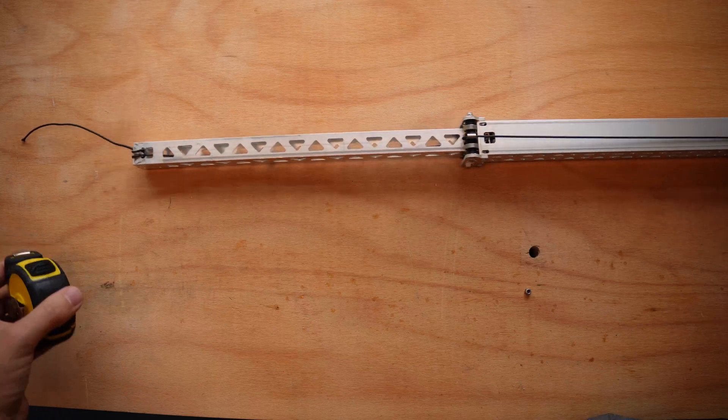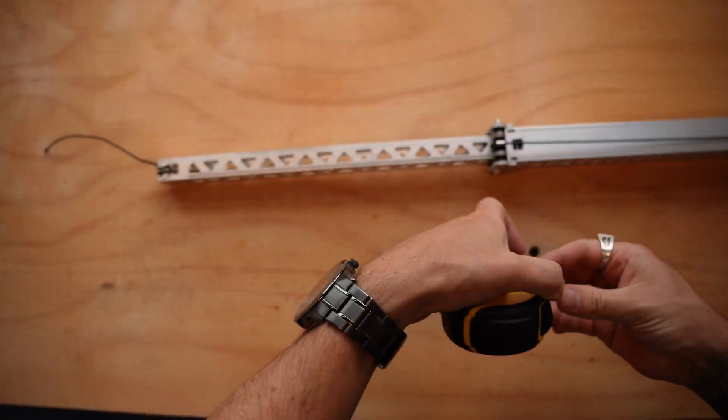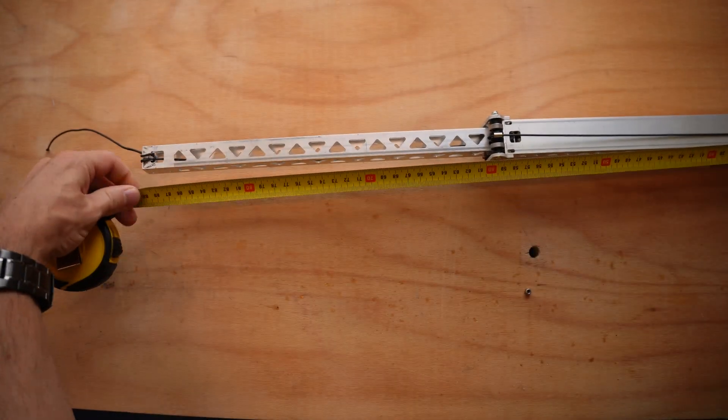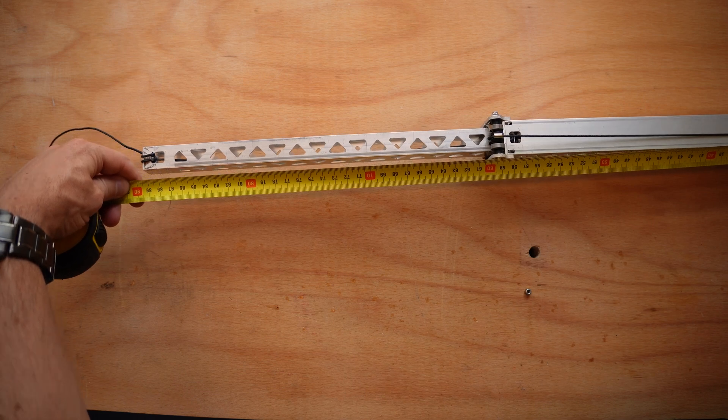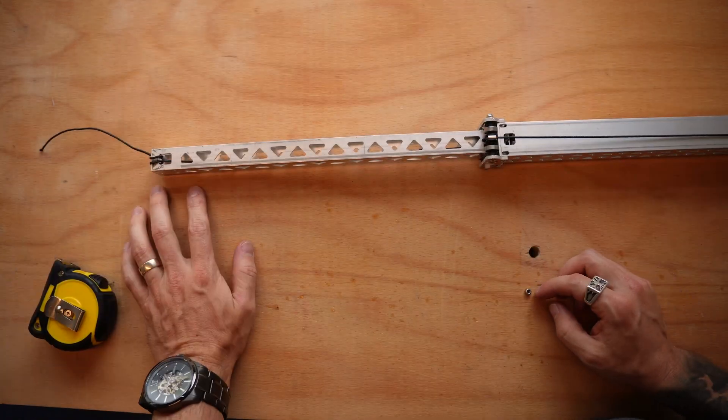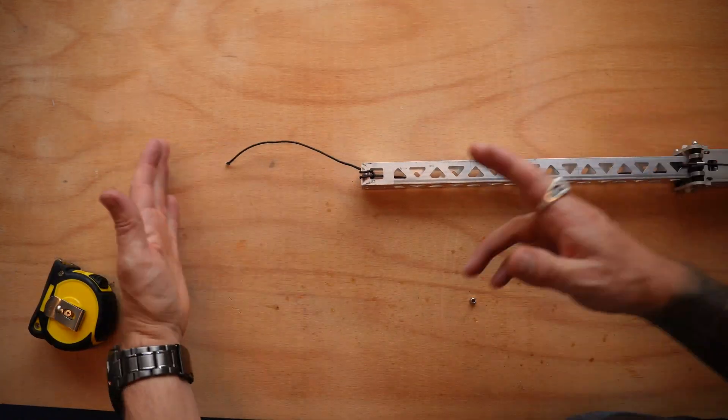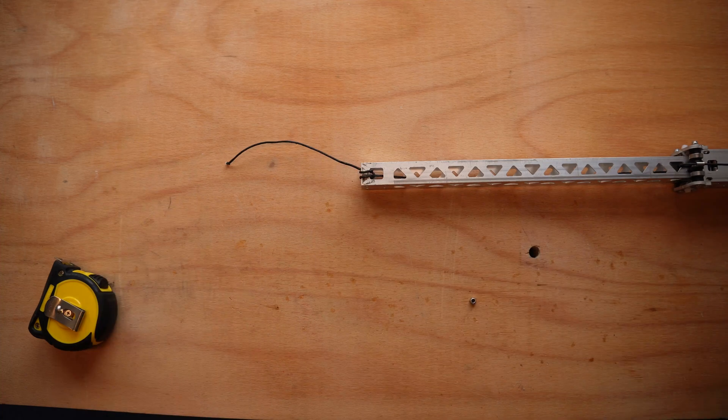At full stroke length, if we were to fully extend this thing out, it has a full stroke length of 90 centimeters functionally on the two-stage sit. Though I do believe they sell an extension kit that adds an additional 30-ish centimeters to your extension.